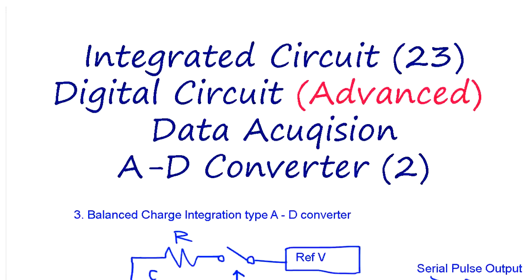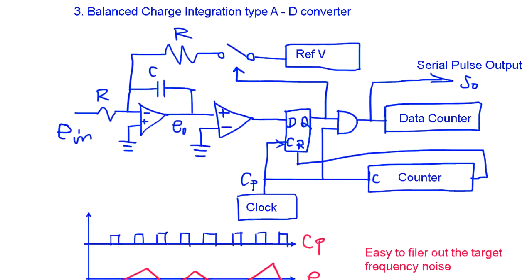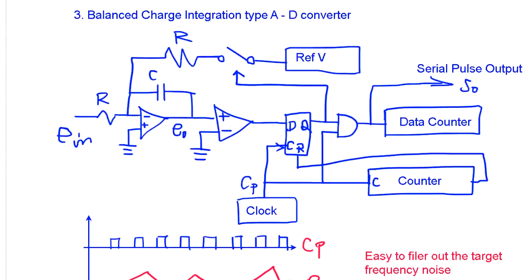The third one is balanced charging integration type AD converter. Now we already covered the integral type. This one is slightly different.